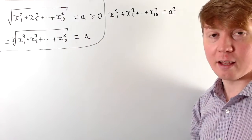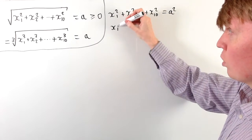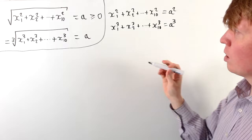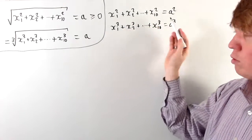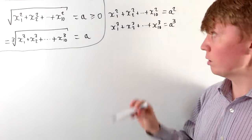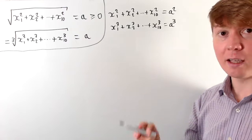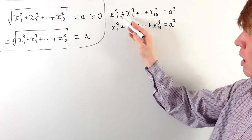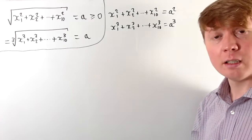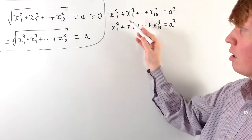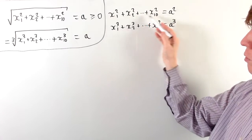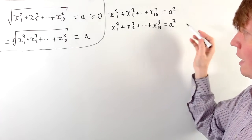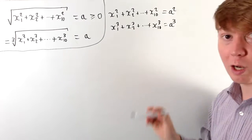We can do something similar with the second equation — cubing both sides gives us x1 cubed plus x2 cubed up to x10 cubed equals a cubed. The first equation is quite restrictive: if x1 were bigger than a, then x1 squared would be bigger than a squared, and adding the remaining non-negative squared terms would make the sum exceed a squared. So all x terms need to be less than or equal to a. We don't have the same restriction with the cubed terms, since those could be negative.